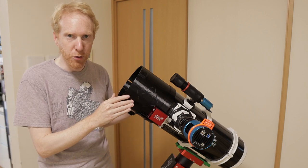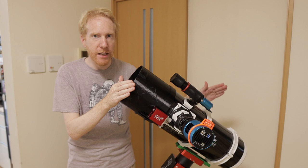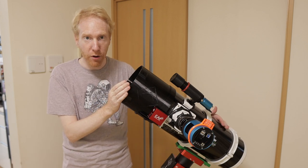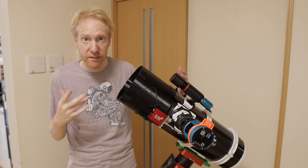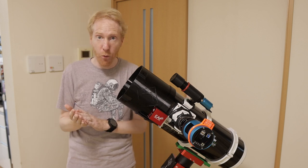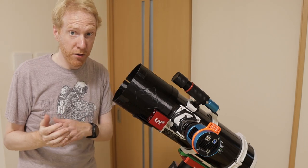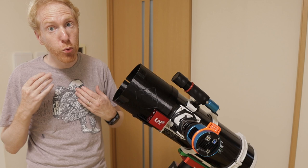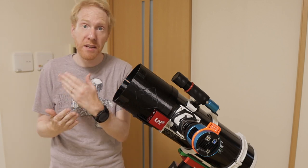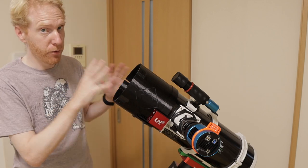So what is difficult with this particular Newtonian? Well, natively it is an F4 Newtonian. So it's already registered as a fast astrograph. F4 is quite fast and it starts to be really demanding on having precise collimation to get the best star shapes out of your scope.